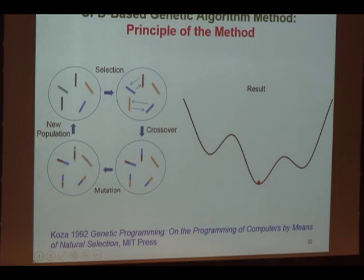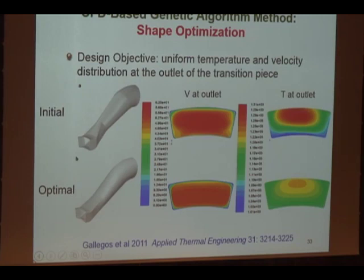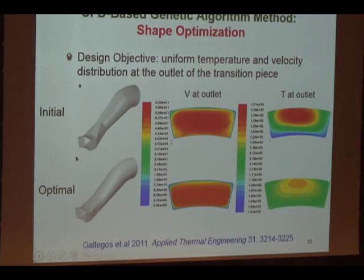This is again a forward simulation, but you start with a different initial population and identify which one is best. I'll show an example with a target: in the original design, velocity and temperature distribution is not uniform. When you use inverse modeling with the GA method, the final result shows velocity and temperature distributions that are much more uniform.